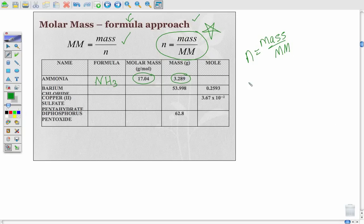And so our moles then are going to equal 3.289 grams divided by 17.04 grams per mole. And if we do this, you should get the number 0.1930. I took that to four significant figures because both of my givens were in four significant figures.